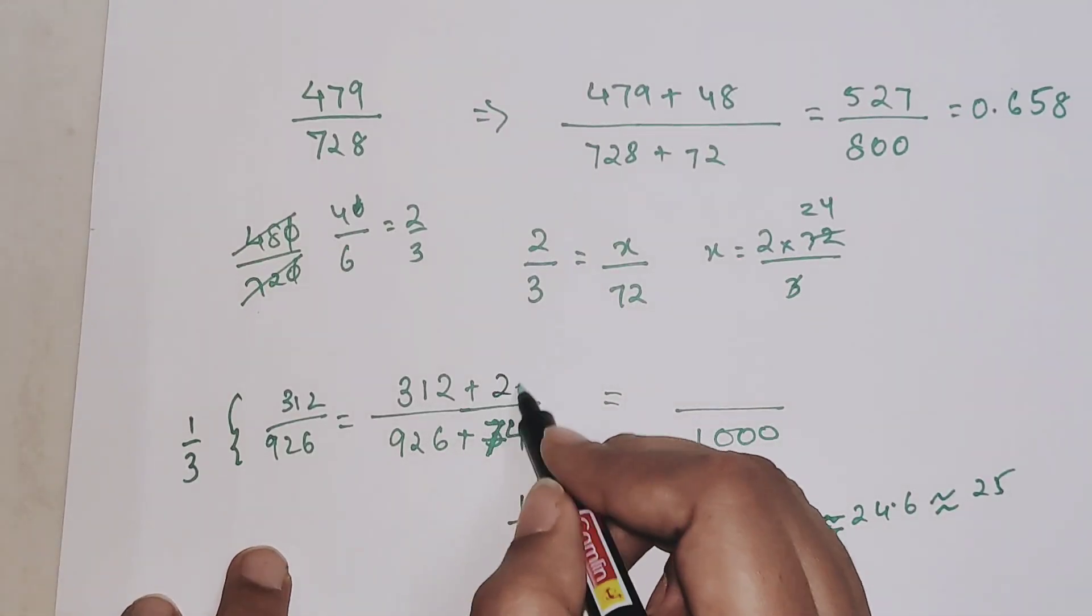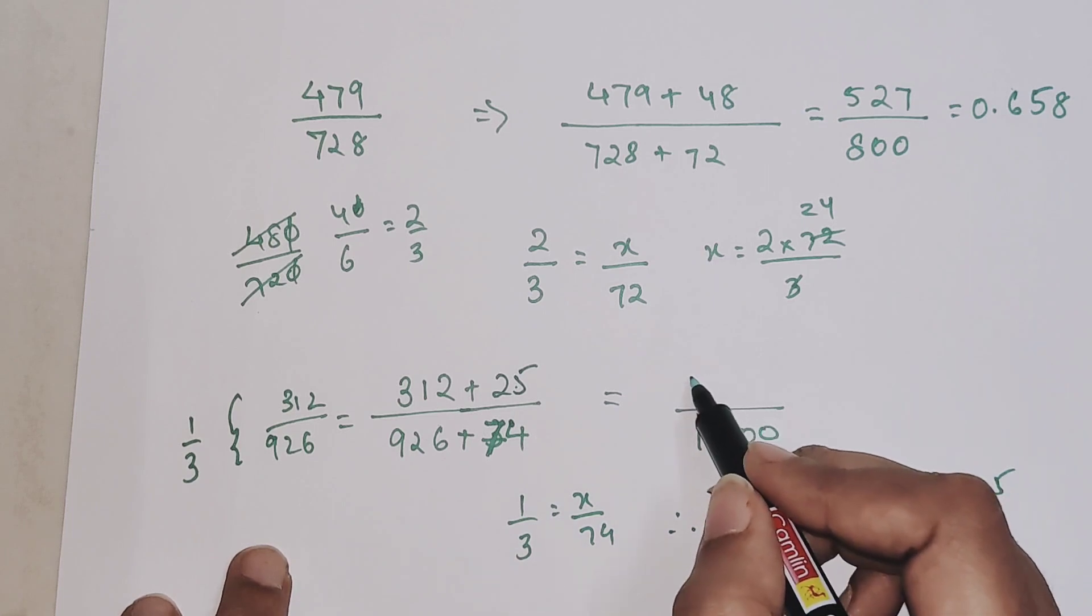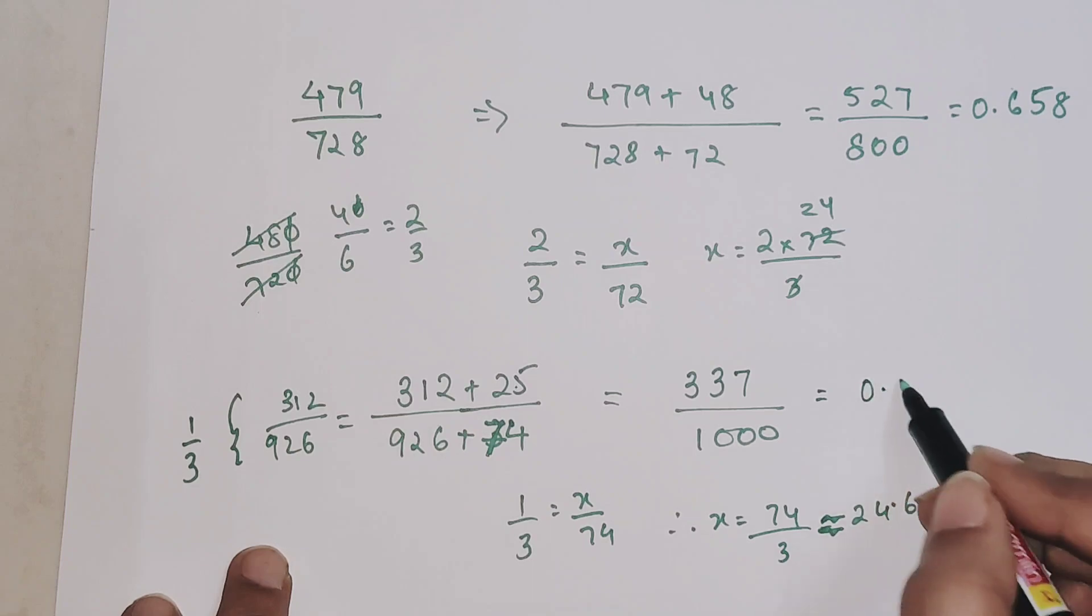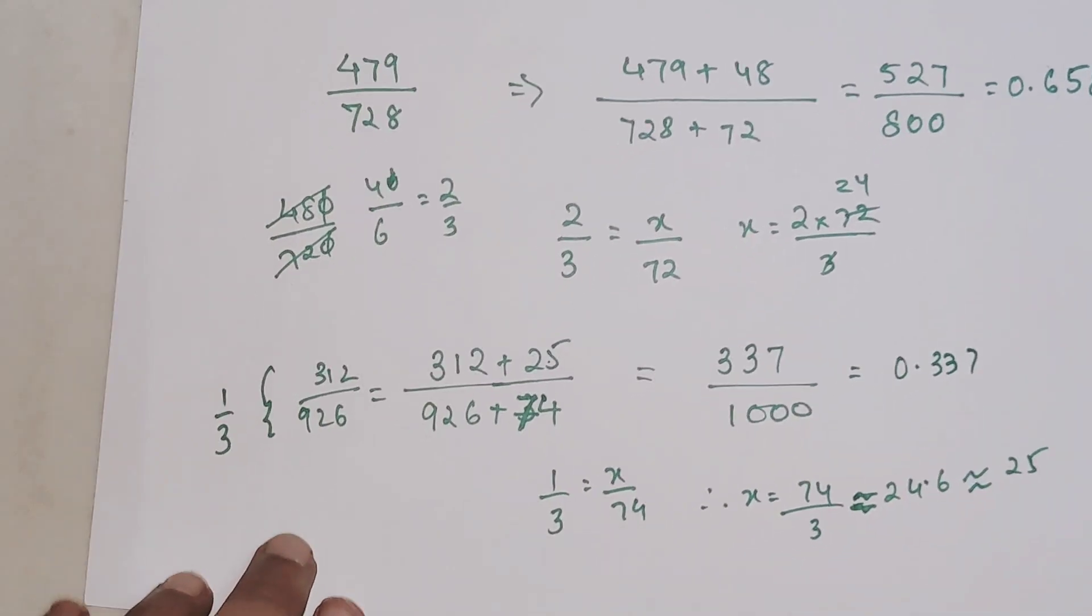If I'm adding 25, I'm left with 337, so your final answer is 0.337. Now let's see what is your actual answer in your calculator.